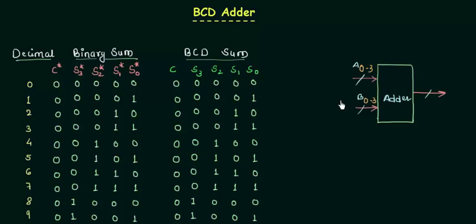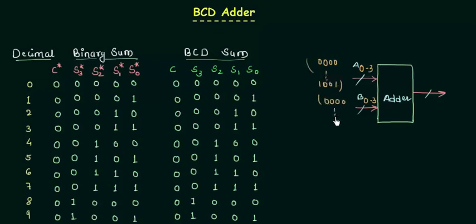One important thing you need to notice is that both A and B are from 0 to 9. Why 0 to 9? Because we are adding decimal numbers, and decimal digits range from 0 to 9.